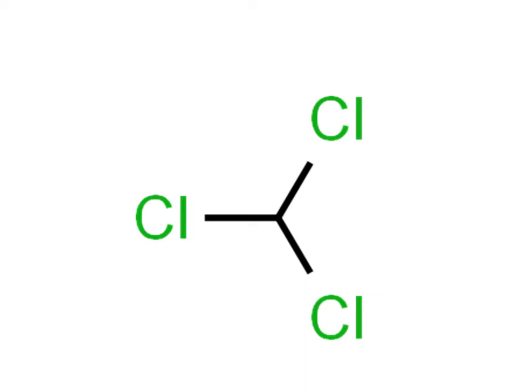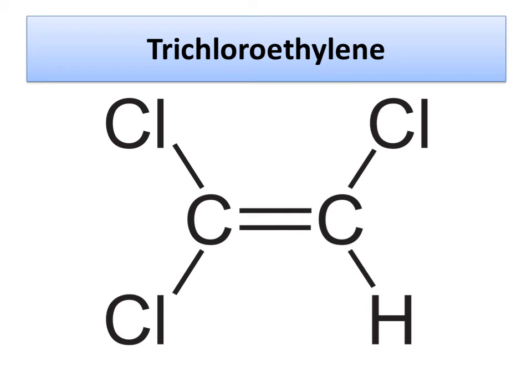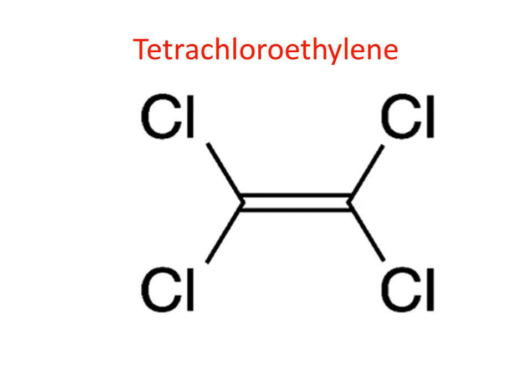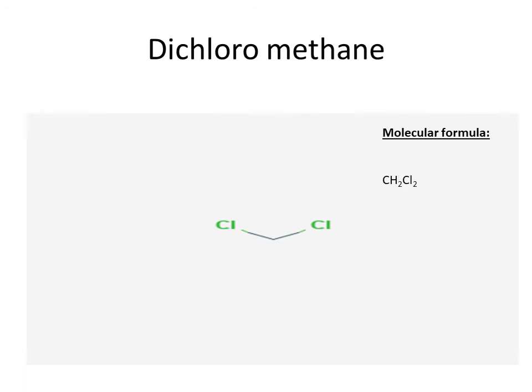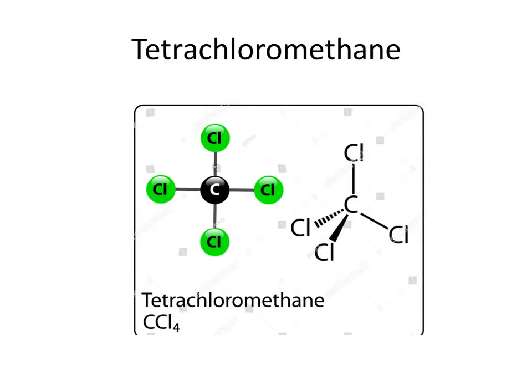You can see the structure of chloroform already discussed. The next compound is tetrachloroethylene — 'tetra' means four, so four chlorines are present, with two carbons and a double bond. Its uses: mainly used in dry cleaning, and it is an excellent solvent for organic materials. It is also used as a solvent to remove grease from metal parts, similar to trichloroethylene. Since there are no hydrogens, it is also called carbon tetrachloride or tetrachloromethane.